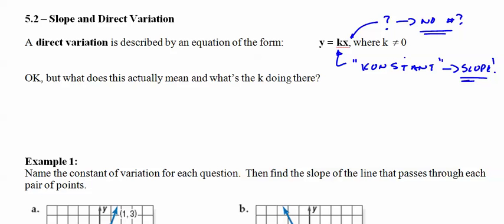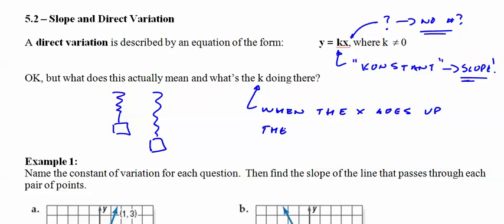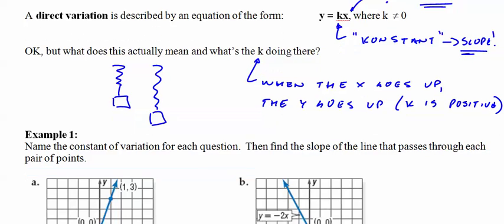So what does it mean? The classic is a spring. If I hang a weight on a spring, the weight will drop it. Bring it down further. How much? Well, that's the constant of the spring. The more weight I put on, the further it'll go down. So I add 10 pounds, 10 times the constant. I add 20 pounds, 20 times the constant. So the K just means it's when the X goes up, the Y goes up if K is positive. If not, it flips. It's just a direct variation.